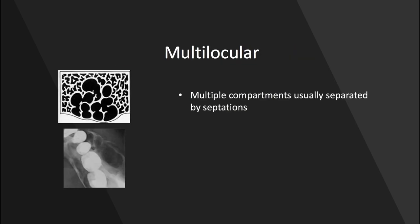We can also have a multi-locular radiolucency. This time, there are multiple compartments, and they're usually separated by these thin radiopaque septations. This is a great example of a multi-locular radiolucency.